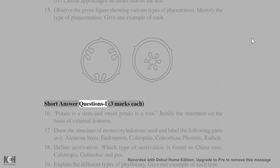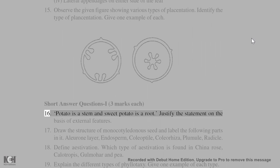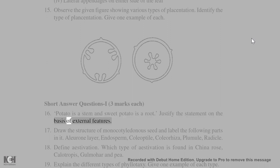Short answer questions I (3 marks each): 16. Potato is a stem and sweet potato is a root — justify the statement on the basis of external features.